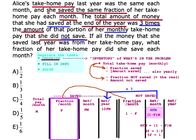So that means 4FM equals (1 minus F) times M. Dividing both sides by M: 4F equals 1 minus F. So 5F equals 1, and F equals 1/5. That's choice D, like dog.